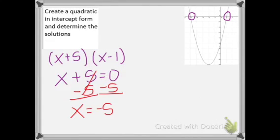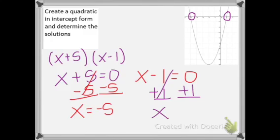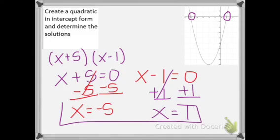We'll do x minus 1 equals 0, then add the 1 on both sides. This cancels out and x equals 1, so those are our solutions which match what we have on the graph.